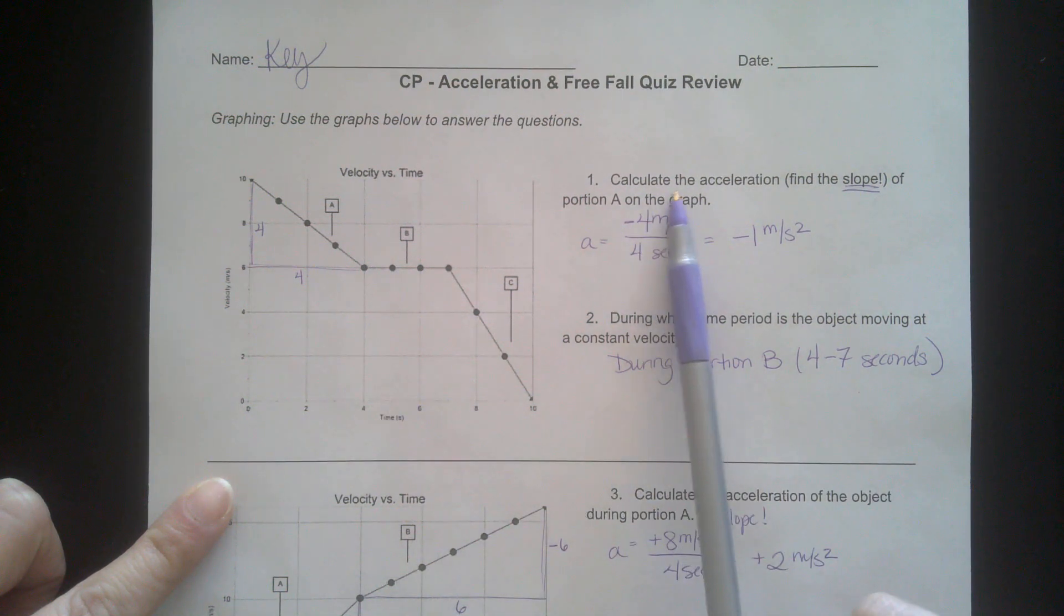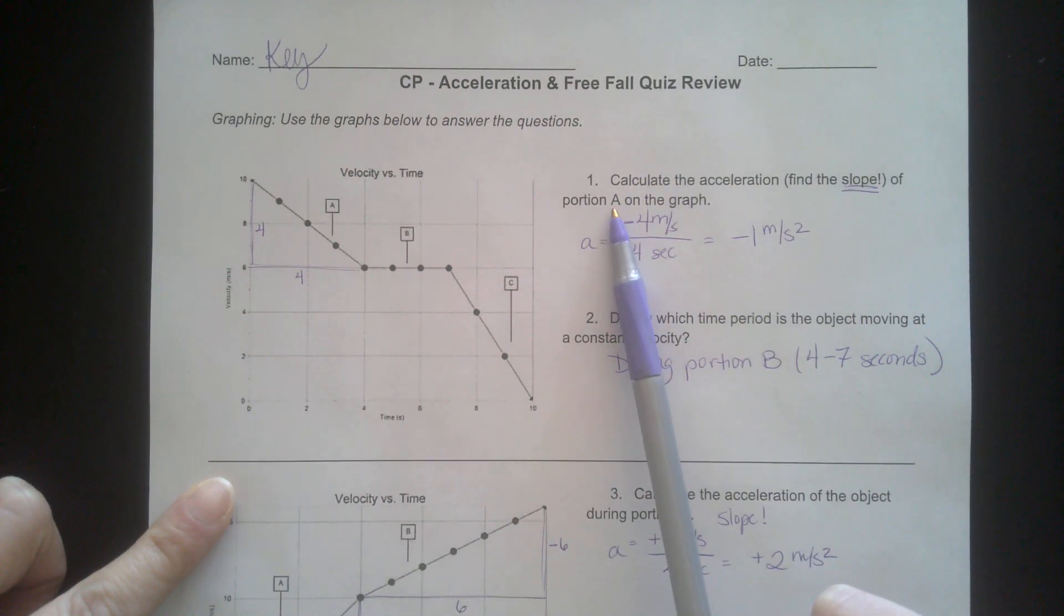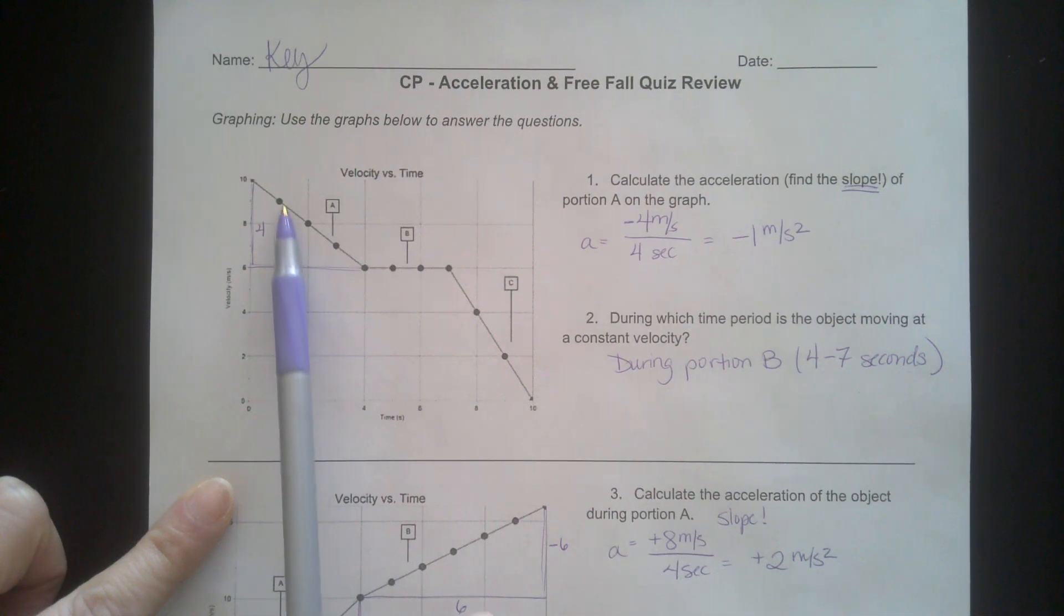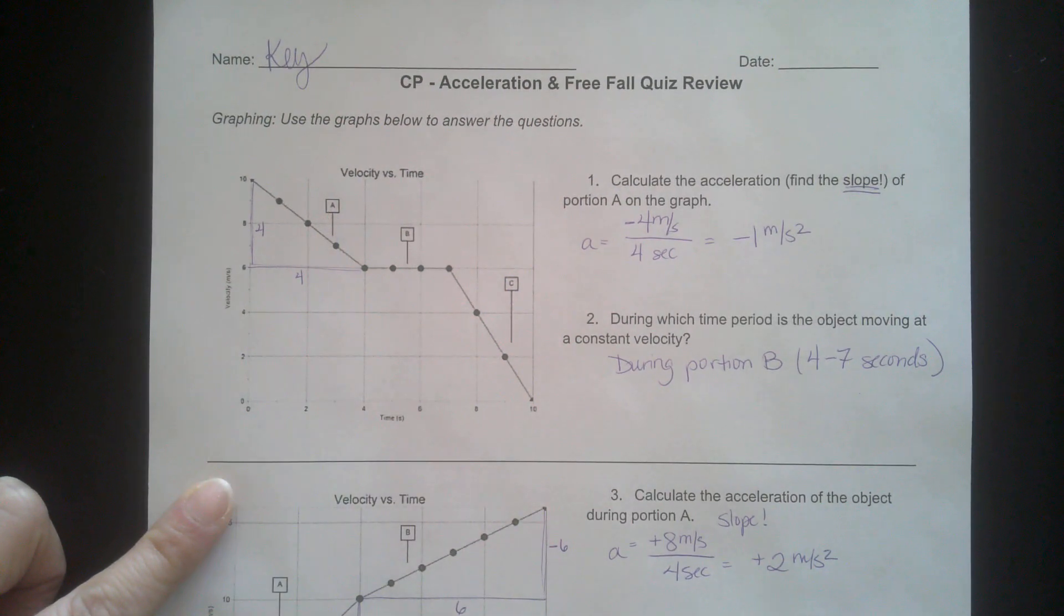To calculate the acceleration during any portion on this graph, you're just finding the slope. During portion A, remember slope is rise over run, change in Y over change in X. Pick two points on the graph and find change in Y, change in X. I picked the first point and the last point during section A.